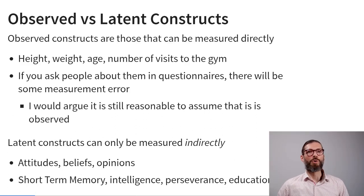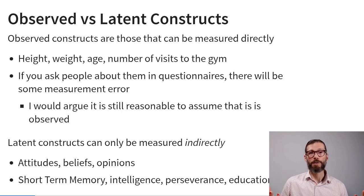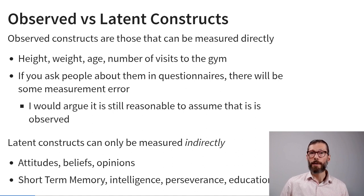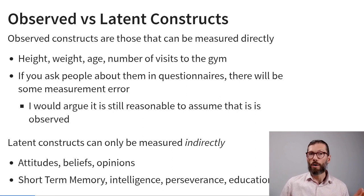I want to introduce a new distinction: observed versus latent constructs. Observed constructs are those that could theoretically be measured directly — for example, people's height, weight, age, or how often they visited the gym in the past seven days.